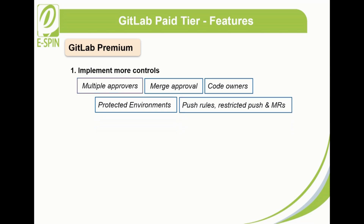Multiple approvers allows multiple and selective sign-off of merge requests to speed up releases in control. Merge approval involves a set of approvers to provide more trust to the eventual result of a merge being confirmed. Code owners let users select anyone from the team — not necessarily a developer — to have approval permissions and broaden the project's reach.